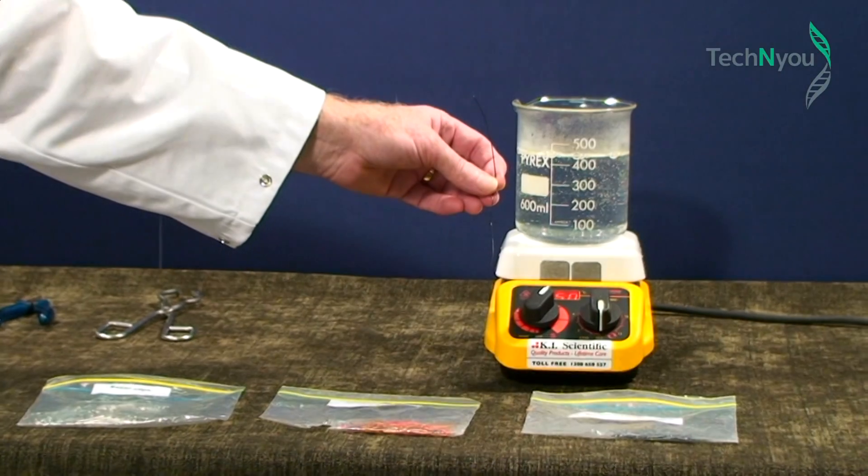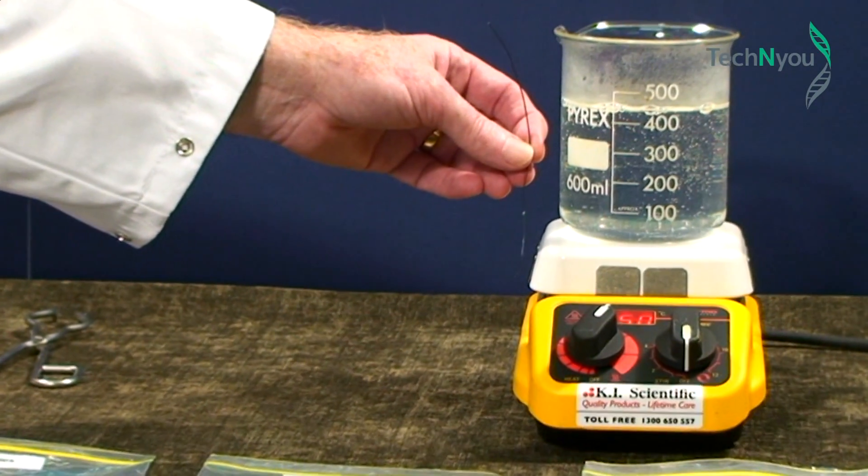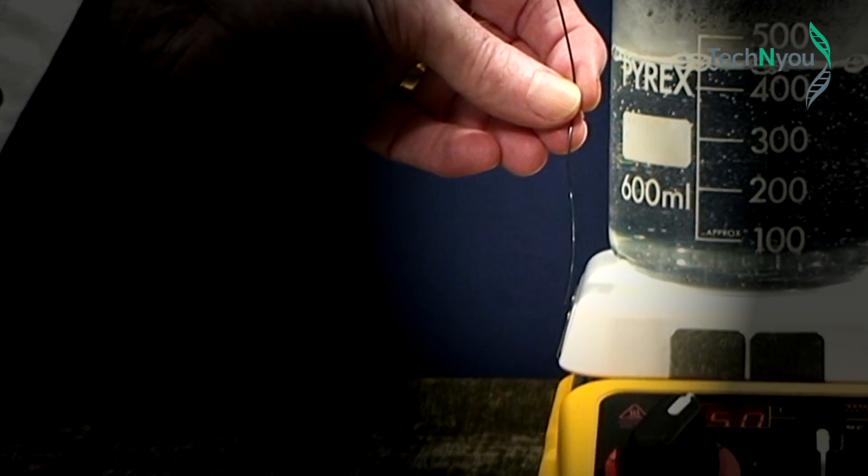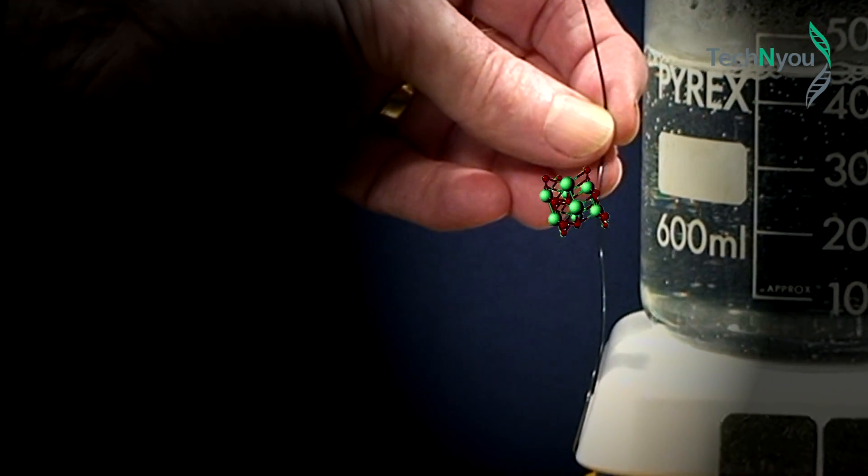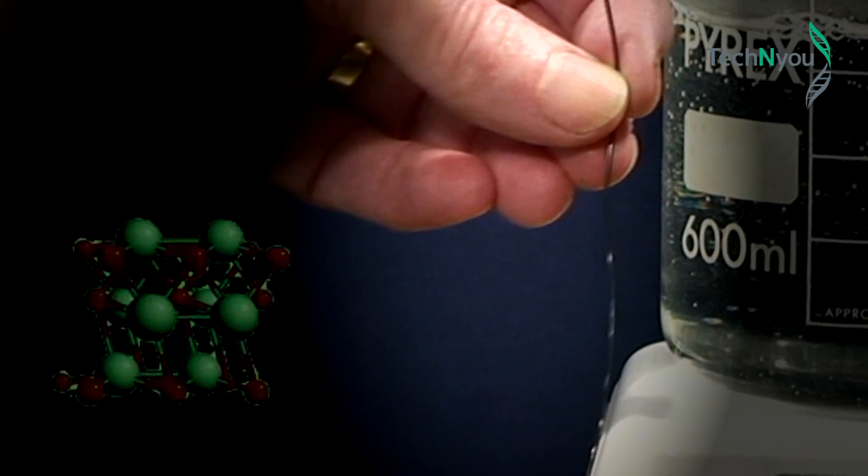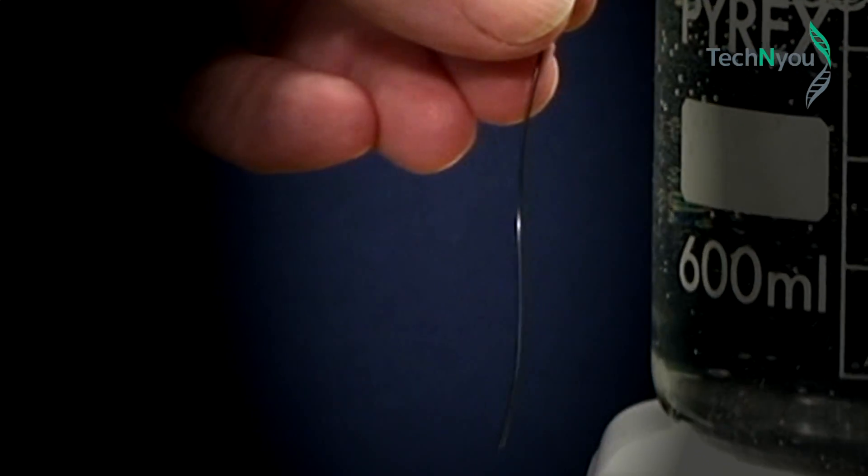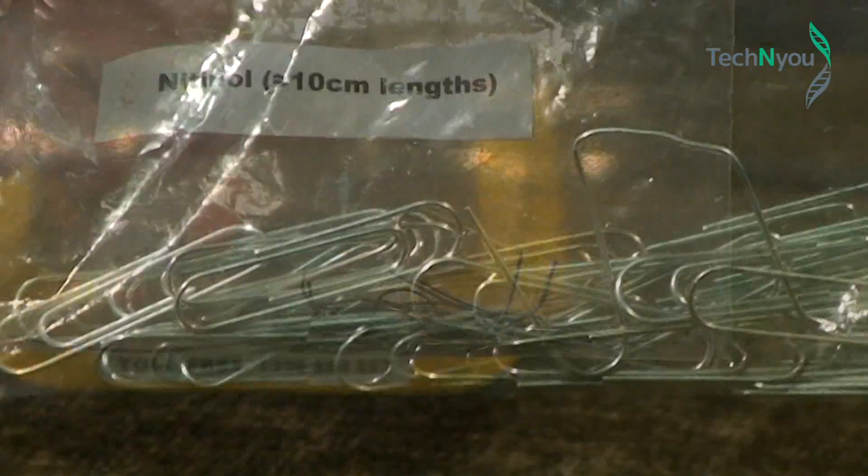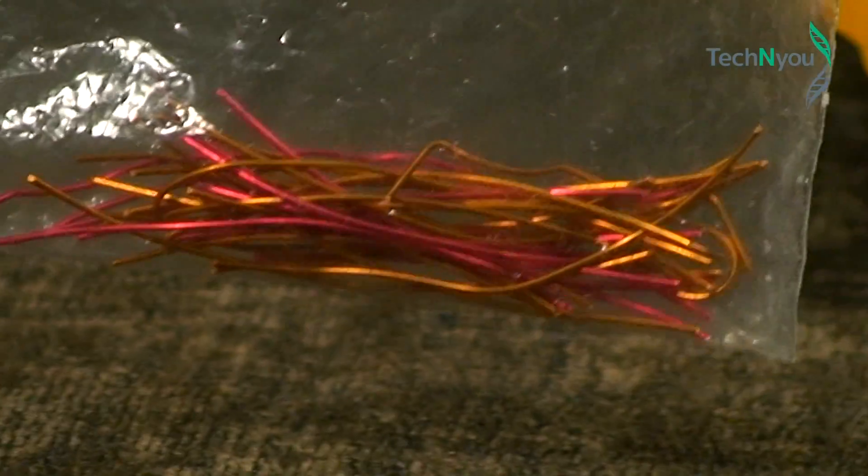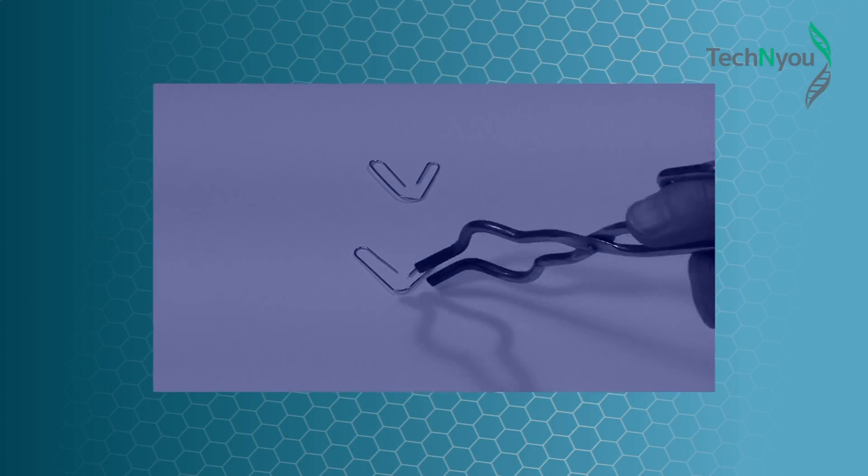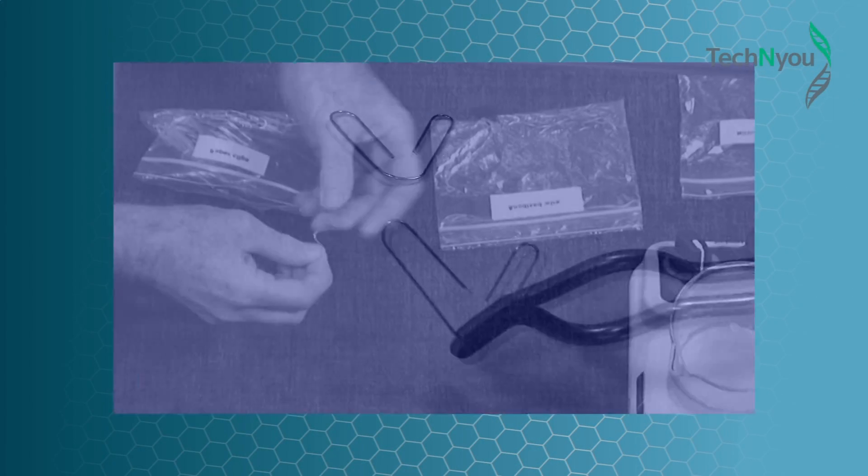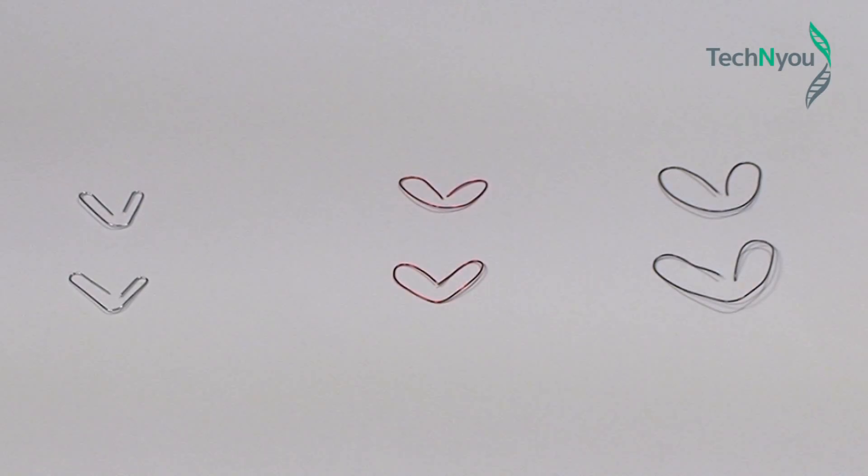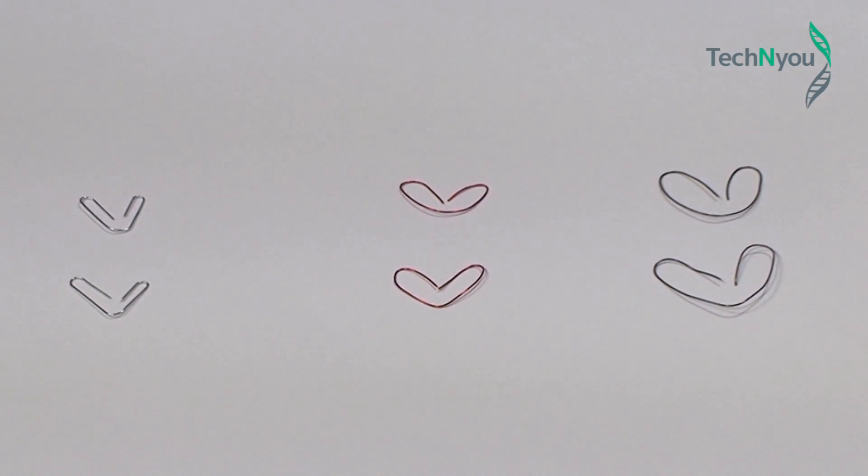This experiment is about shape memory alloys, and this is a shape memory alloy known as Nitinol, which is made from nickel and titanium. In part one of the experiment we will use three different metals: the Nitinol wire, a steel paper clip and copper wire. We will bend the three straight wires at room temperature, so each wire is similarly shaped. Our three metal wires all now have a V shape.